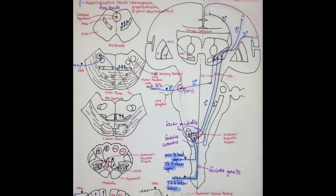So let's say you start at your legs: you travel ipsilaterally through your fasciculus gracilis, you synapse at your nucleus gracilis, which is in your lower medulla, you decussate at your internal arcuate fibers, so you cross midline. Now you're called the medial lemniscus; you travel through your medulla, pons, midbrain, and then you synapse at your VPL, also called your ventroposterolateral nucleus of your thalamus.